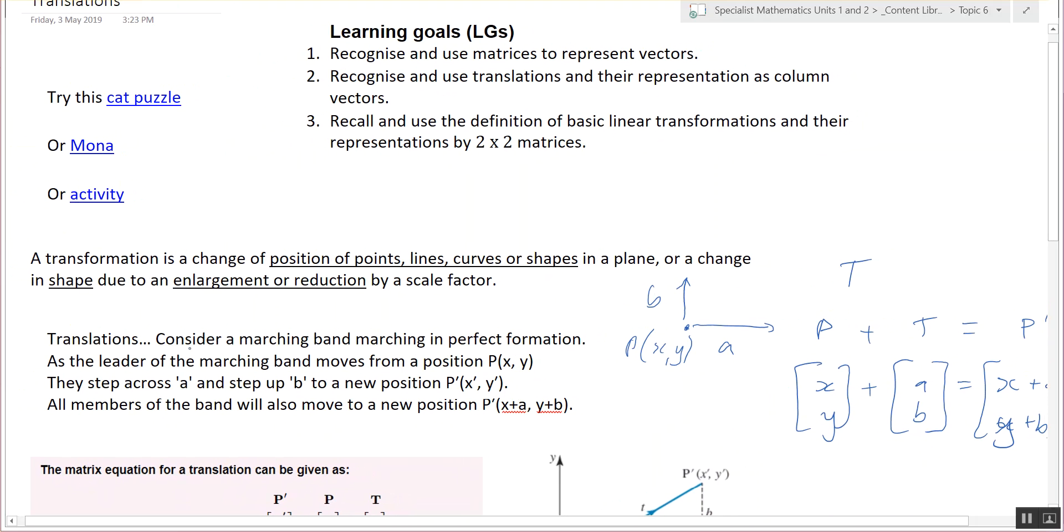So like the example in the textbook, consider a marching band - all the people in the band are at points and they're all going to march maybe across and up one, so that's like their new point in the band.